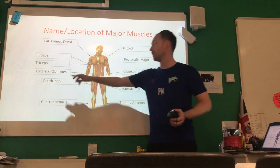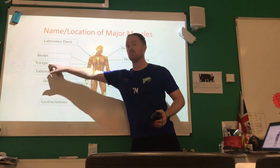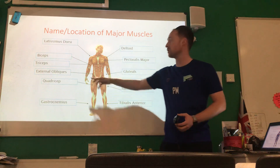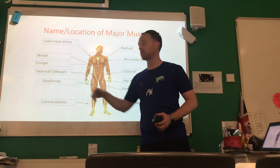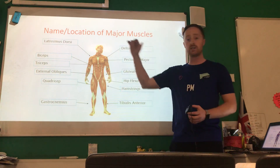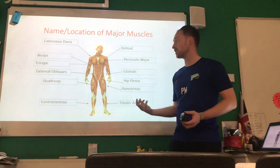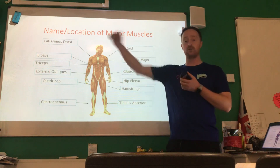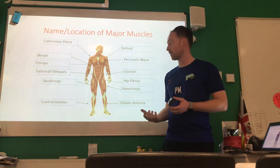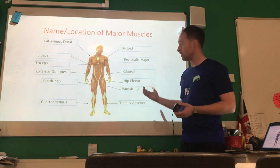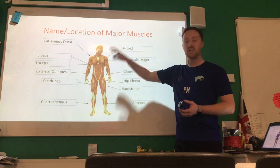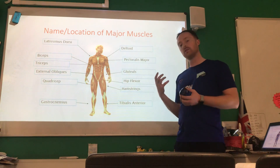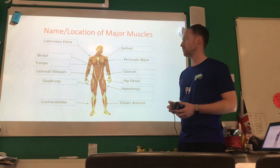For example, if we look at the tricep muscle, which is at the back of the arm, the main function of the tricep muscle is to extend the arm at the elbow. This can be useful, for example, in boxing to produce a jab. Make sure you know examples for these different muscles and also know the types of movement they produce.